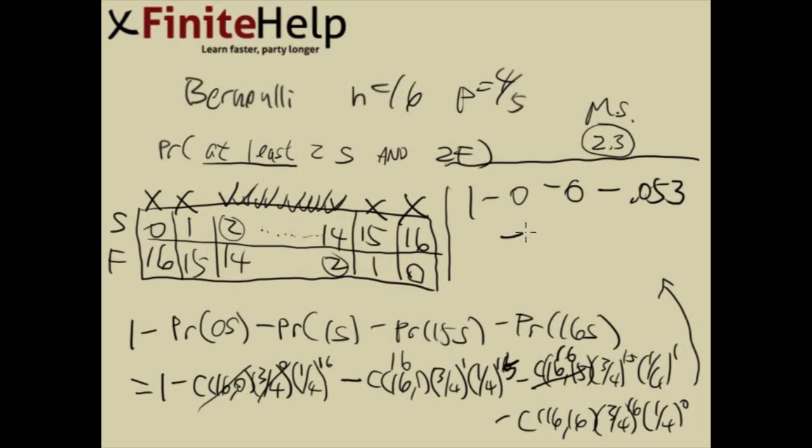And here 16 to 16 is going to be 1. So here we really only have 3 fourth to the 16th. That's going to be 0.010. So I'll take 1 minus those 2. And the final answer is going to be 0.937.